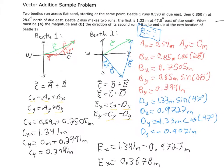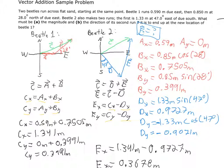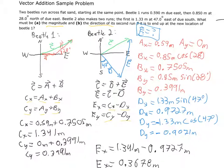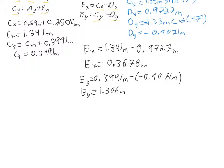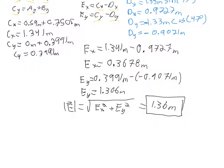You might think we're done with ex and ey, but the problem asks for the magnitude and direction of vector e. The magnitude |e| = √(ex² + ey²). Plugging in those values gives approximately 1.36 meters — that's our magnitude.